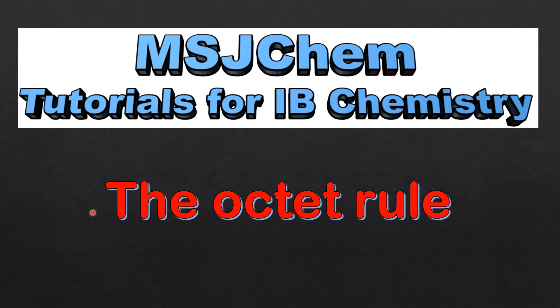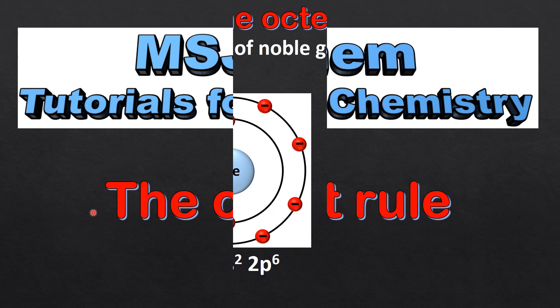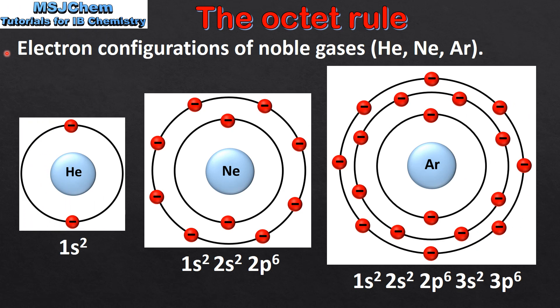This is MSJChem. In this video I'll be looking at the octet rule. We will start by looking at the electron configurations of three noble gases: helium, neon and argon.